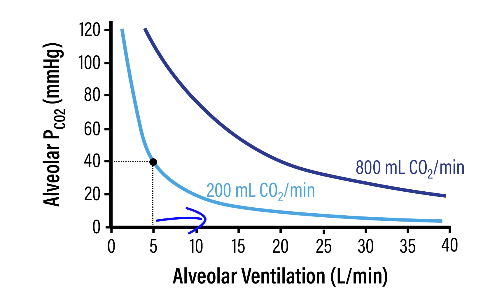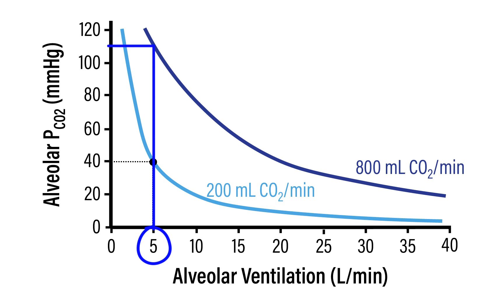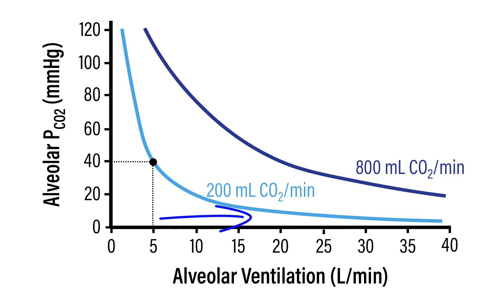Conversely, if alveolar ventilation increases from 5 liters per minute, the PCO2 drops because of the increase in the rate at which CO2 is leaving our body — analogous to making the hole in our bucket larger. This relationship can be appreciated by imagining what would happen if you increase the rate of CO2 production during moderate aerobic exercise, where CO2 production can increase from 200 to 800 milliliters of CO2 per minute. If you try to maintain a normal alveolar ventilation of 5 liters per minute, PCO2 becomes deleteriously high. To maintain an alveolar PCO2 of approximately 40 millimeters of mercury, alveolar ventilation must be increased — in this scenario, to 20 liters per minute.